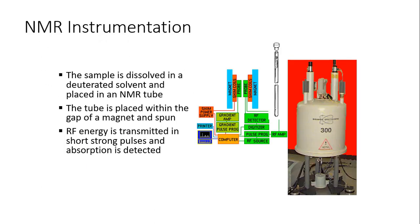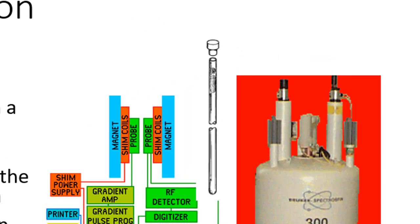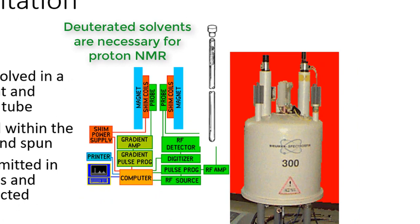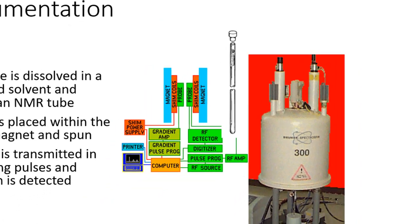Every NMR spectrum uses tetramethylsilane (TMS), which has a chemical shift of zero, to calibrate the rest of your chemical shifts. The NMR instrument we have is a 400 MHz instrument. What we would do is take the glass tube, put a sample of our crude aspirin in it, dissolve it in a deuterated solvent like deuterated chloroform, insert it into the magnet, and pulse it with radio frequency energy.